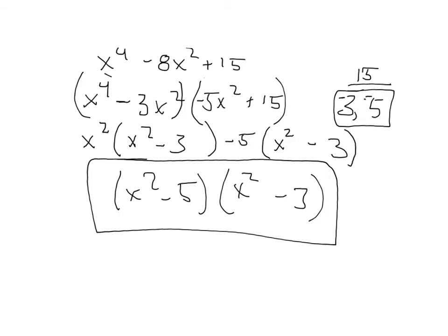The first step in solving this trinomial is figuring out what multiplies to 15 and adds to negative 8. That is negative 3 and negative 5. After that, you rewrite the problem using negative 3 and negative 5. And you come up with x to the 4th minus 3x squared minus 5x squared plus 15.